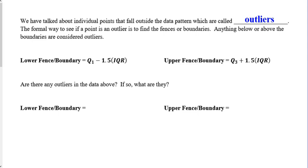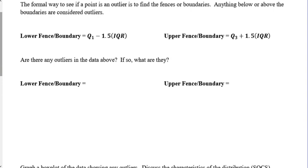We've talked about individual points that fall outside of the data pattern. They are called outliers. You've already seen and kind of already pointed out what the outlier for this class is. The formal way to see if a point is an outlier is not just saying, oh, it looks like an outlier. There's a mathematical way. We've already done that earlier this year. The lower fence, or boundary, is Q1 minus 1.5 times the IQR. And then, the upper one is Q3 plus 1.5 times the IQR.